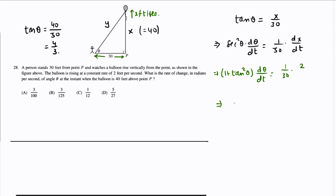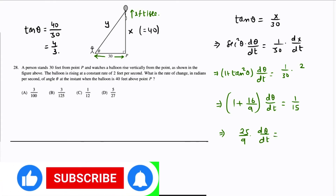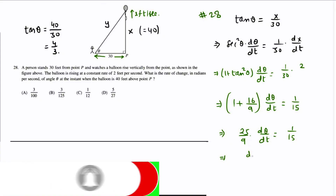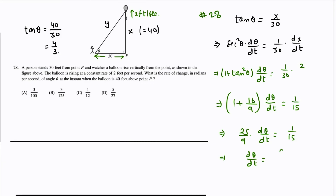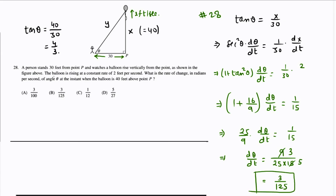This becomes 1 + (4/3)² = 1 + 16/9 = 25/9. So dθ/dt = 1/15, since 2 times 1/30 = 1/15. Therefore 25/9 times dθ/dt = 1/15. Cross multiplying and simplifying — 3×3 = 9, 3×5 = 15 — we get dθ/dt = 3/125 radians per second, which matches option B.